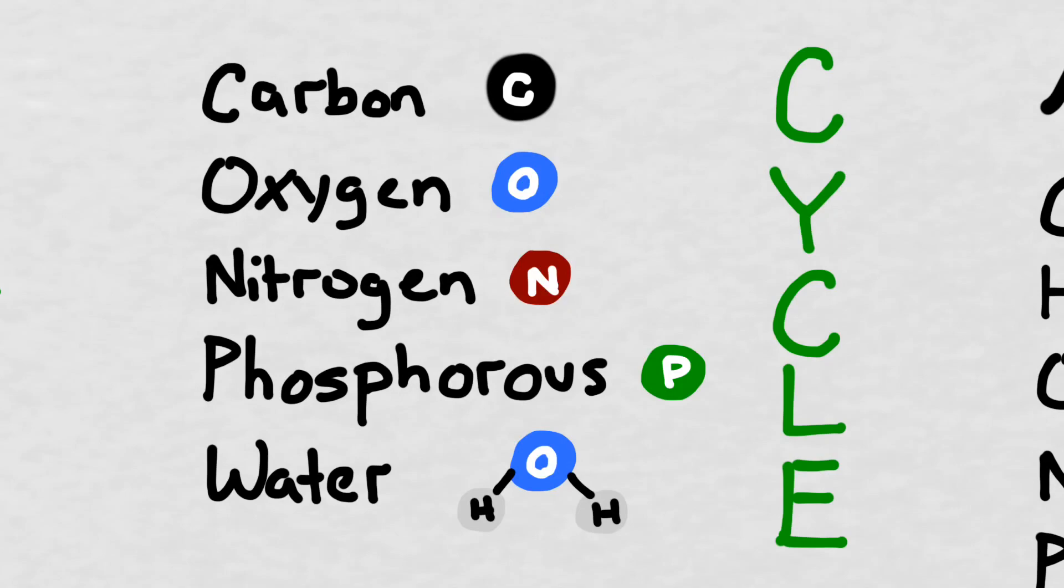Now on to cycles in biology. There are quite a few of them, and some of the most commonly discussed ones are the carbon cycle, the oxygen cycle, the nitrogen cycle, the phosphorus cycle, and the water cycle.